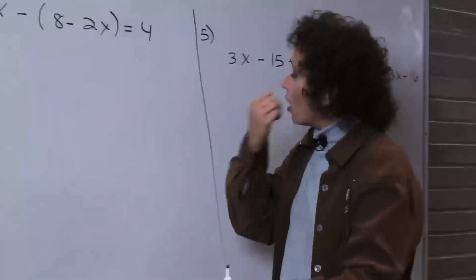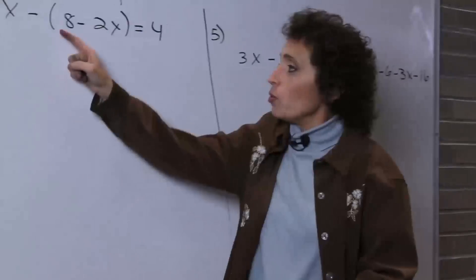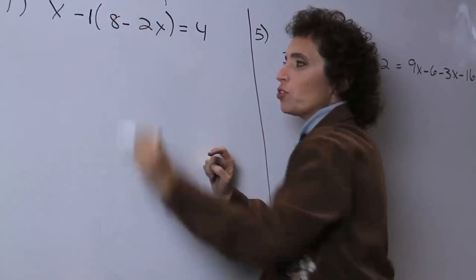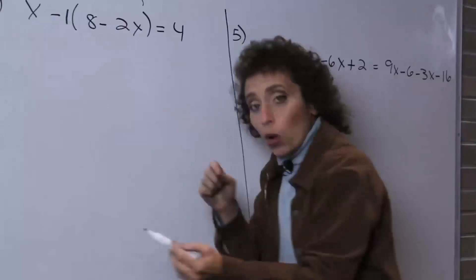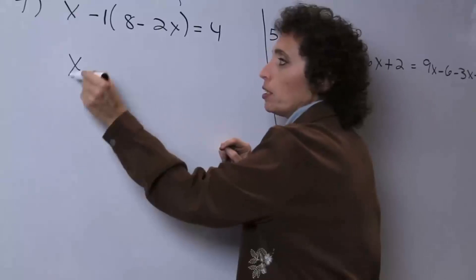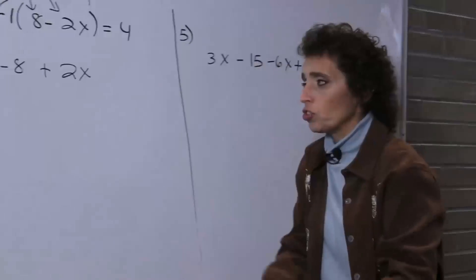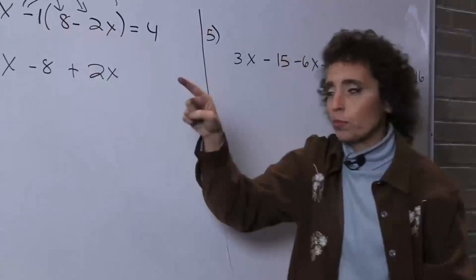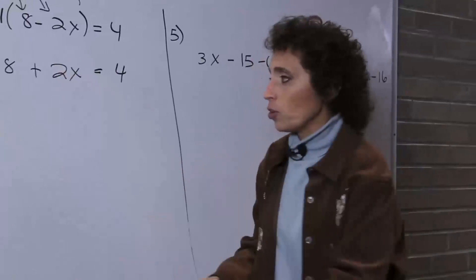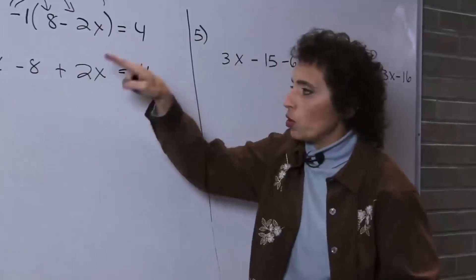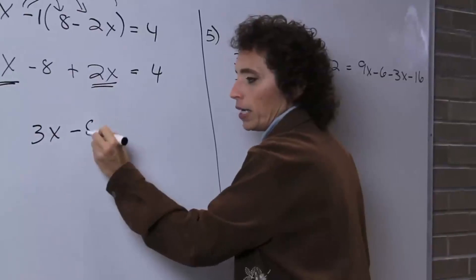Alright, let's look at the left side of this next problem. There's a parenthesis, but I cannot do anything inside because the terms are not like. I see this minus — remember, there's always a number in front of the parenthesis. I'm going to put a 1 there, so there's a negative 1. I'm going to distribute that negative 1 — be careful, because when you distribute a negative, it changes all the signs. Once you distribute, you must drop the parentheses. Negative 1 times 8 is negative 8. A negative times a negative is positive 2x. The right side equals 4.